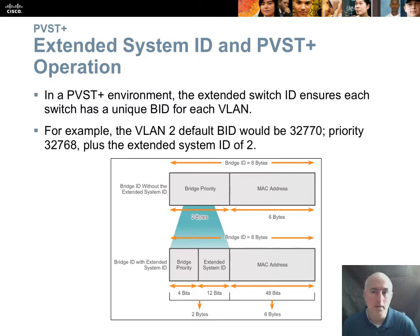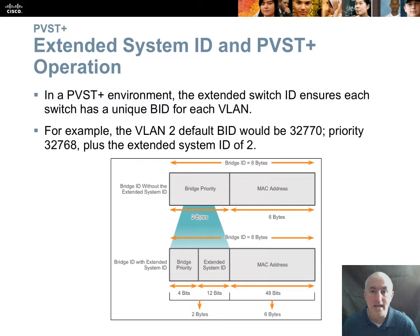For extended system ID and PVST Plus operation: if you're doing VLAN 20, the bridge ID would be 32770—you take the default bridge priority of 32768 and add 2 for VLAN 2, giving 32770. It's that simple.